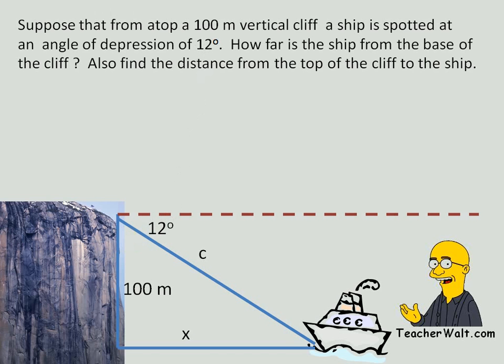But we can figure out this unknown side. Because obviously, the cliff and the horizontal line form a 90 degree angle, 12 of which is taken up by the angle of depression. So we can find the remaining angle by taking 90 minus 12 and get 78. So the angle inside the triangle is 78 degrees.